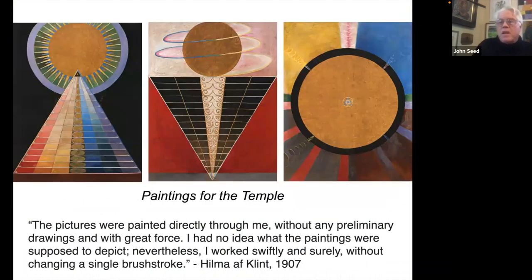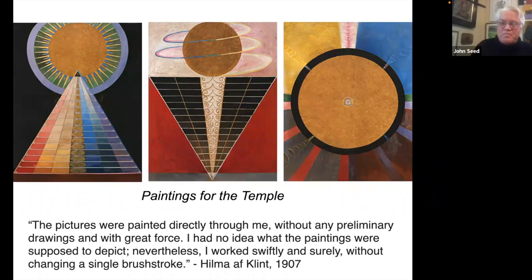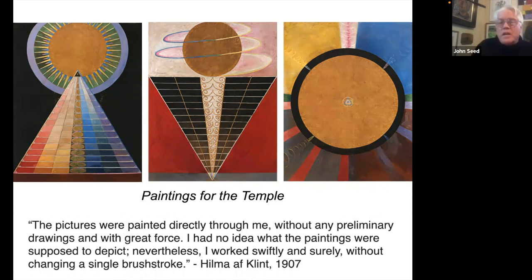Here is a quote from her so you get a feeling of how she contextualized her own art. She says: 'The pictures were painted directly through me without any preliminary drawings and with great force. I had no idea what the paintings were supposed to depict. Nevertheless, I worked swiftly and surely without changing a single brushstroke.' How remarkable is that? Maybe what we would call it now, depending on how we look at Klint, is intuitive artwork. She had a sense of being a medium — having the art come through her — and the abstraction, which often appears in the form of geometric or organic forms, was very direct visionary imagery that founded her abstraction.